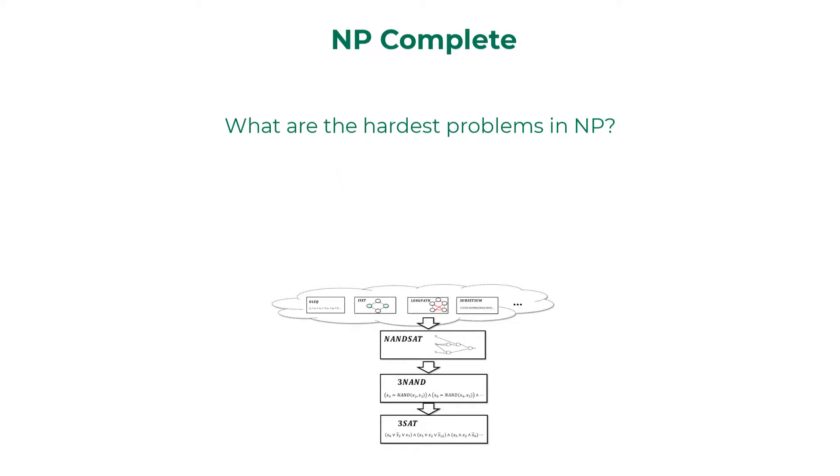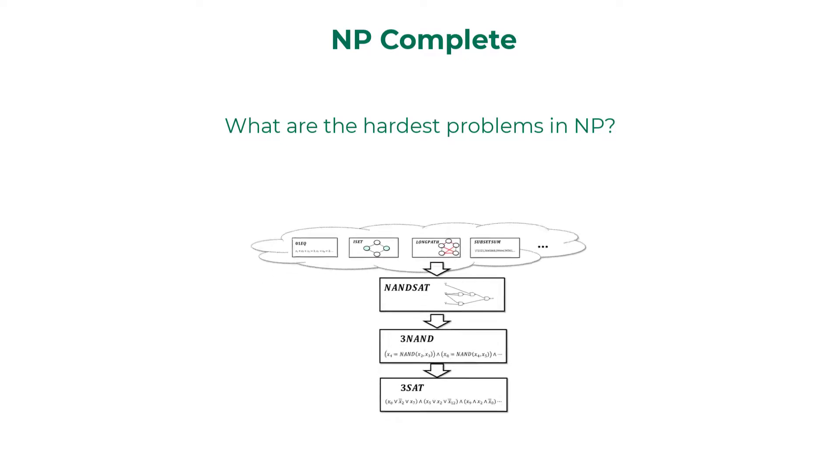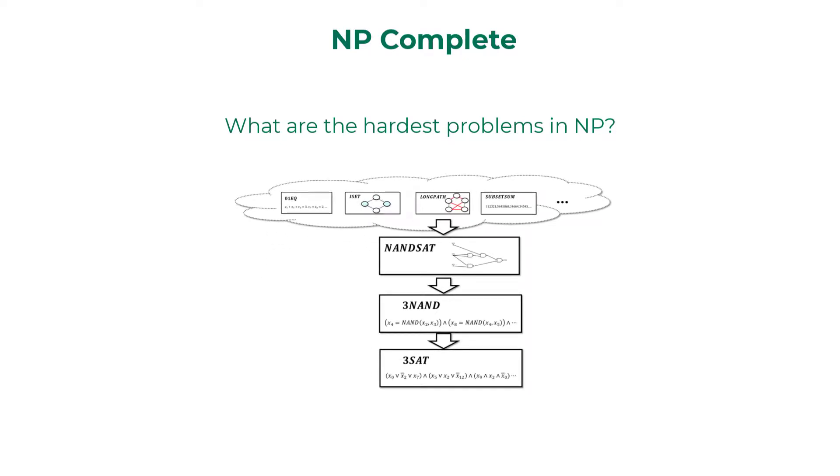If a polynomial time algorithm exists for any of these problems, all problems in NP would be solvable in polynomial time. Basically, every problem in NP reduces to the special class of problems classified to be in the class of NP complete.